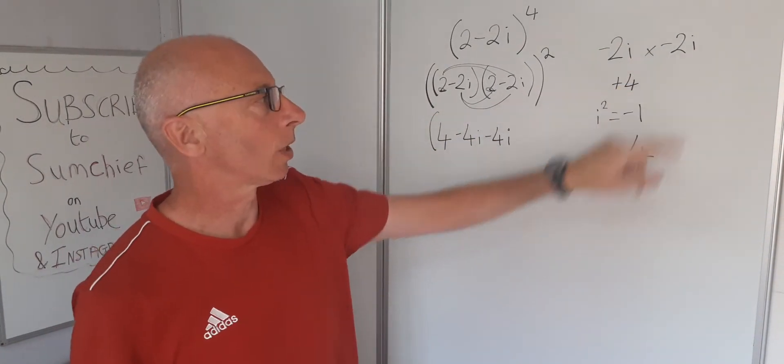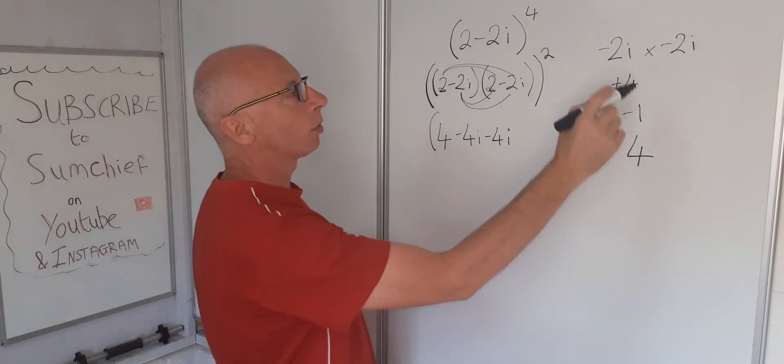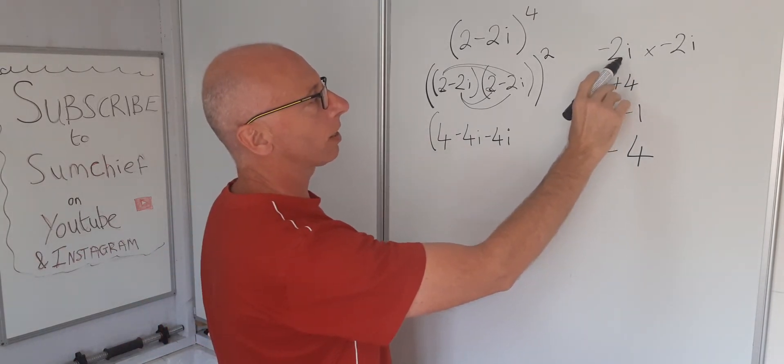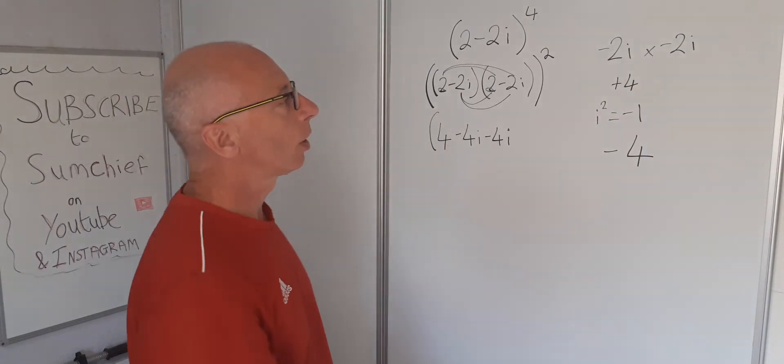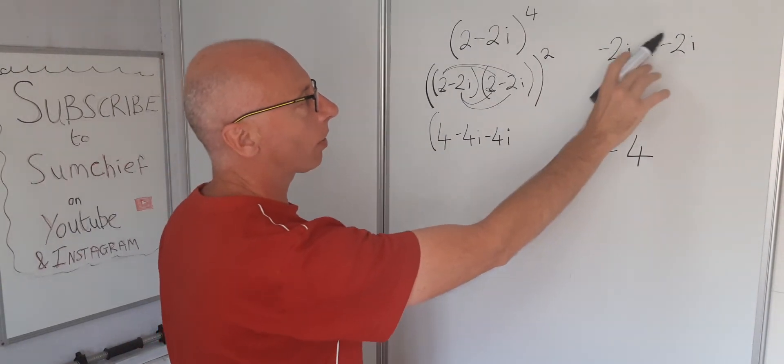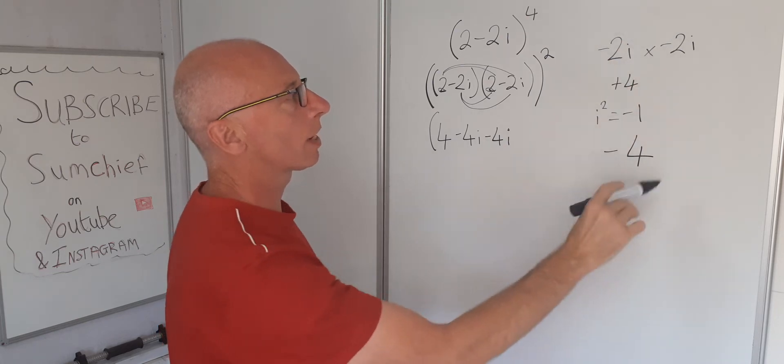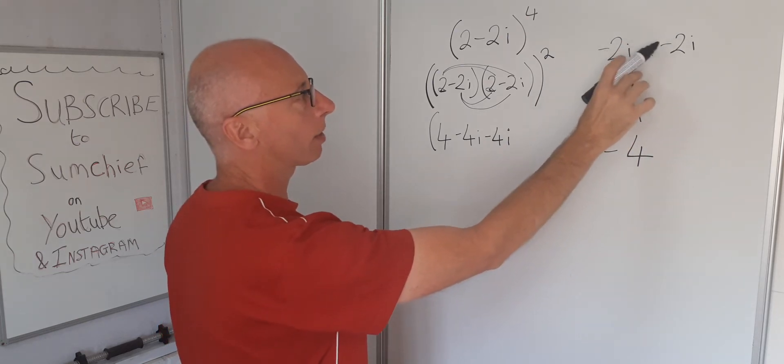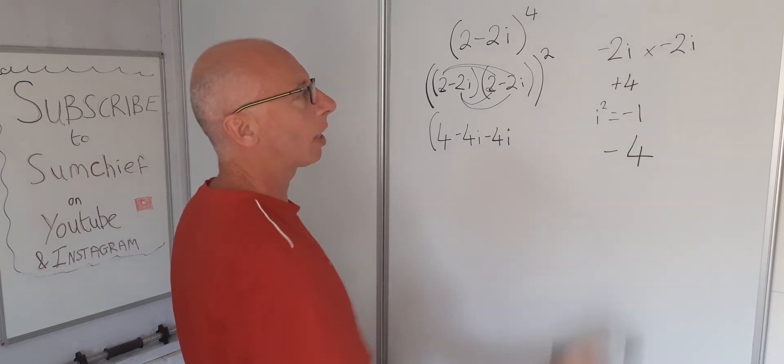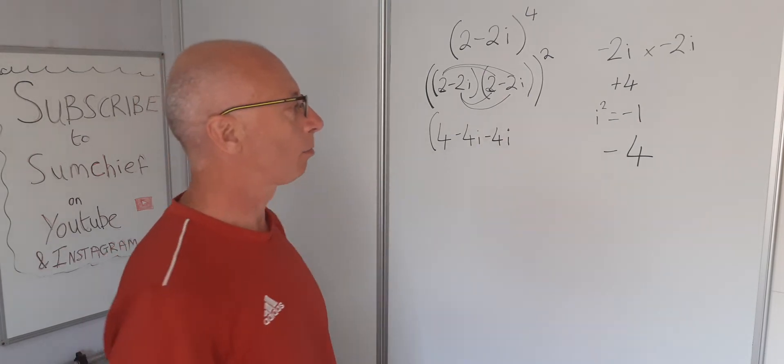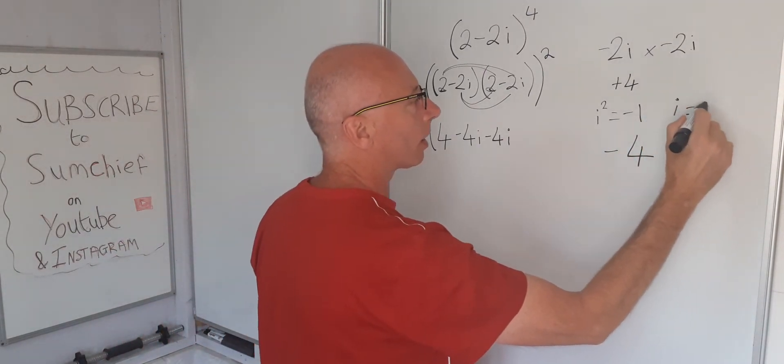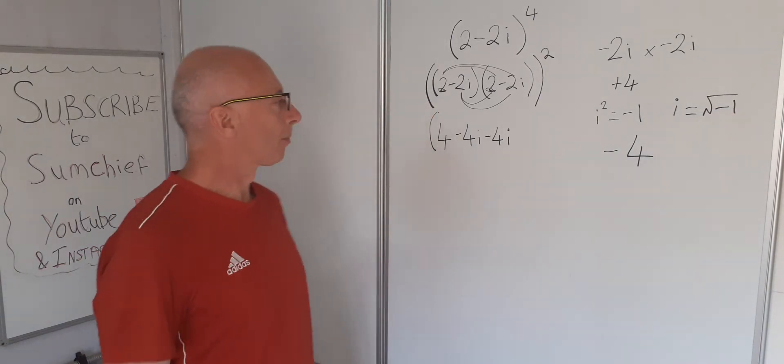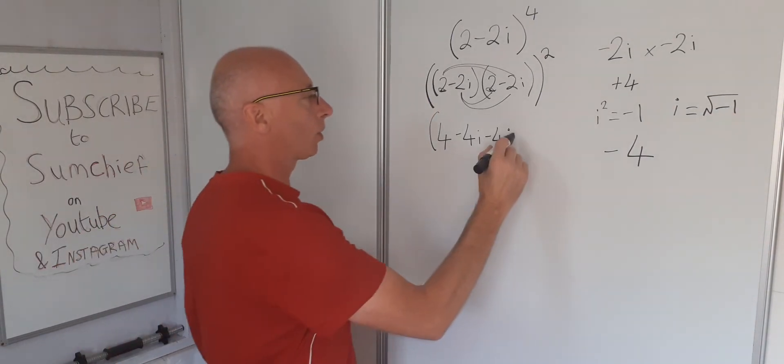The minus 2i times the minus 2i. In normal analysis or real analysis, minus 2 times minus 2 will always be real or positive. But in complex analysis when you've got the i's twice, you always end up with a negative. So minus minus and these two here create a minus. So we end up with minus 4. Remember i is the square root of minus 1. So here we're going to write minus 4.